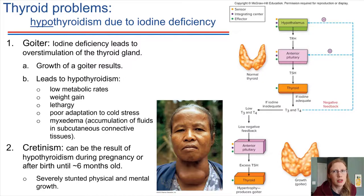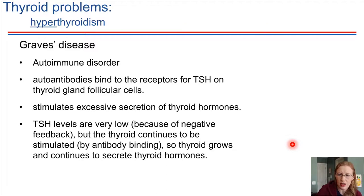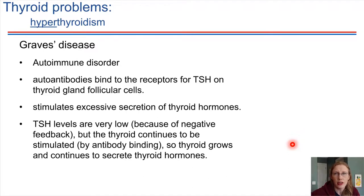At the other extreme is hyperthyroidism — the thyroid producing too much thyroid hormone. There is an autoimmune condition that can lead to this called Graves disease. What happens is antibodies bind to the TSH receptors in the thyroid gland — TSH is normally produced by the pituitary gland to activate the thyroid. So if those receptors are being activated by antibodies, the thyroid gland just keeps making thyroid hormone, producing a lot of T3 and T4. The antibodies aren't supposed to do this, but in this case they stimulate overproduction of thyroid hormones.